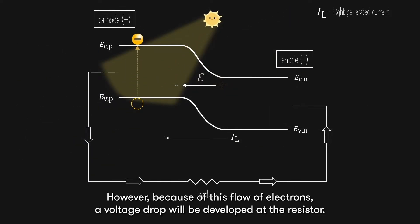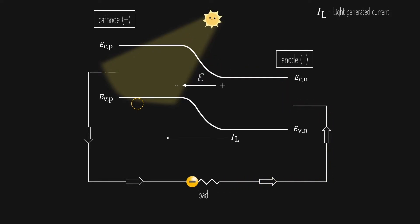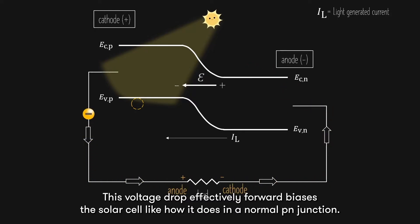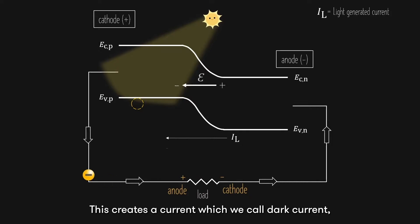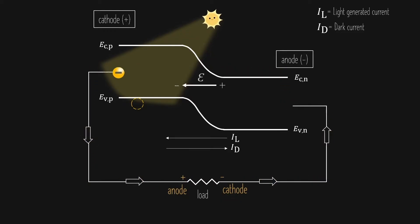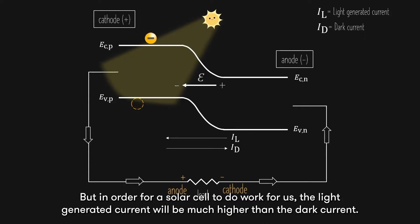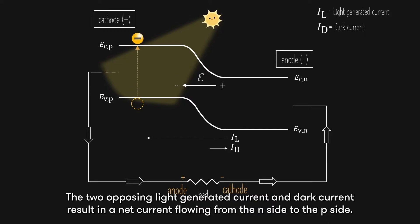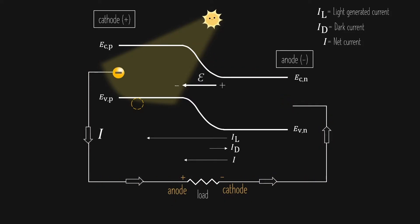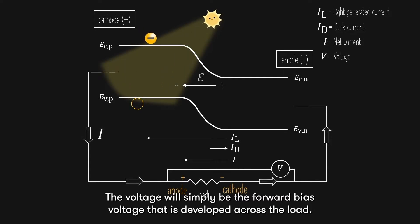However, because of this flow of electrons, a voltage drop will be developed at the resistor. A positive anode develops on the left side of the load, while a negative cathode develops on the right. This voltage drop effectively forward biases the solar cell like how it does in a normal PN junction. This creates a current, which we call dark current, flowing from the P side to the N side due to the diffusion of electrons like in the normal PN junction. But in order for a solar cell to do work for us, the light-generated current will be much higher than the dark current. The two opposing currents result in a net current flowing from the N side to the P side — this is the current you will measure through the wire and load. The voltage will simply be the forward bias voltage developed across the load.